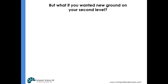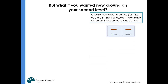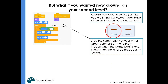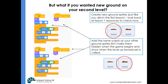Another thing you might want to do is change the ground on the second level. You've got the scrolling ground - two sprites that move from right to left. If we wanted to, we could create two new sprites and code them exactly the same as before, but when the green flag is clicked we hide these sprites and only show them when the level two broadcast occurs. We'd also need to make sure the original ground sprites hide at that point, so they swap from view.